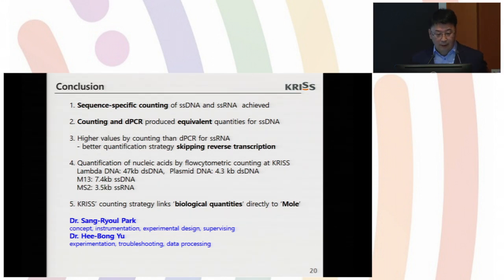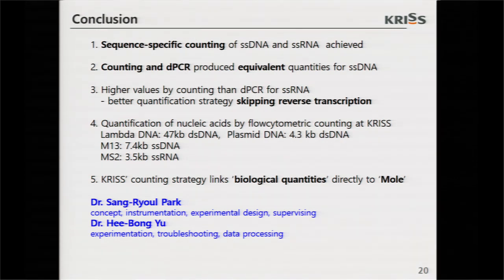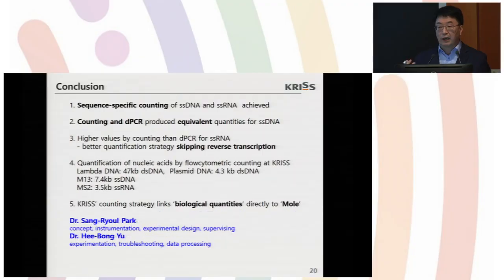So as a conclusion, sequence-specific counting of single-stranded DNA and single-stranded RNA was achieved. Second, counting and dPCR produced very highly equivalent quantities for single-stranded DNA, but higher values were obtained by counting than dPCR for single-stranded RNA. We think that is due to reverse transcription. And we think counting is the better quantification method, skipping reverse transcription. We are reporting four successful counting of lambda DNA, plasmid DNA, M13 single-stranded DNA, and MS2 single-stranded RNA. And we think this counting strategy is linking biological properties directly to mole.